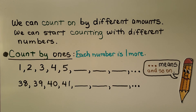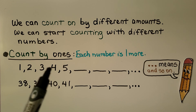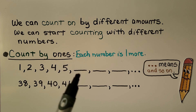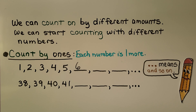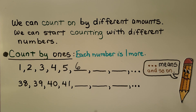We can count on by different amounts and start counting with different numbers. We can count on by 1s — each number is 1 more. That's our pattern: 1, 2, 3, 4, 5. What comes next? If you said 6, you're correct. And what comes after 6? If you said 7, you're correct. And 1 more than 7 is 8.